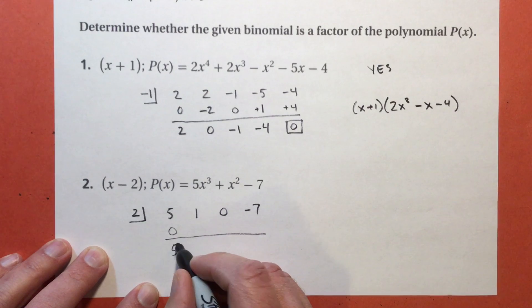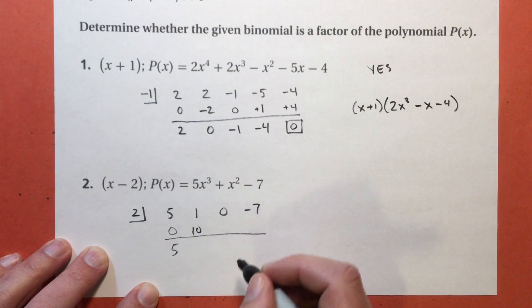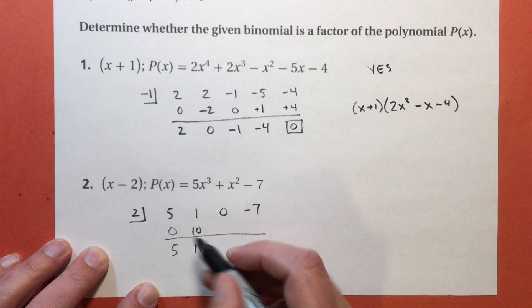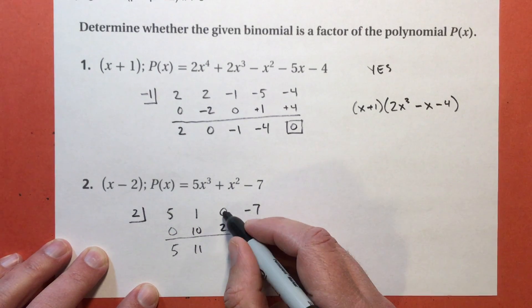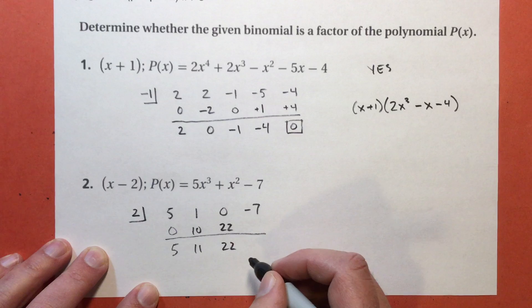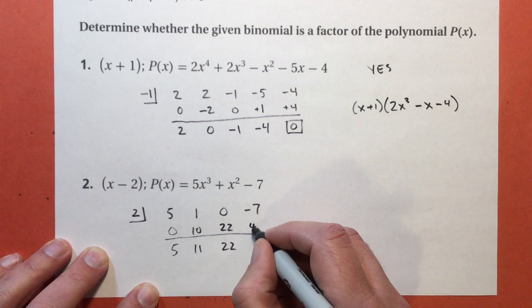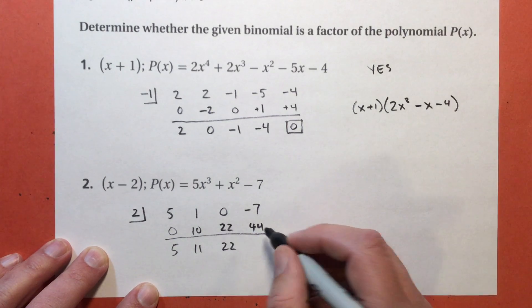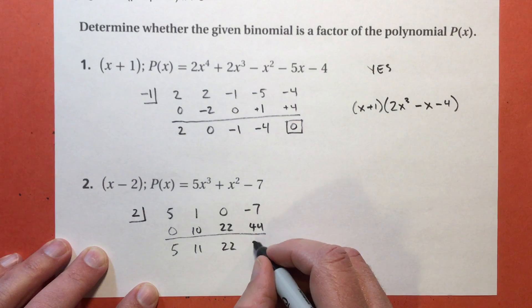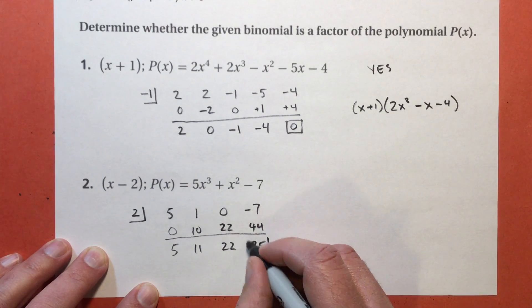5 plus 0 is 5. 2 times 5 is 10. 1 plus 10 is 11. 2 times 11 is 22. 0 plus 22 is 22. And 2 times 22 is 44. Finally, 44 plus negative 7 is 35. I have a remainder of 35.